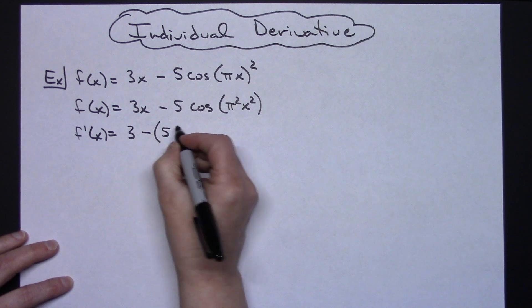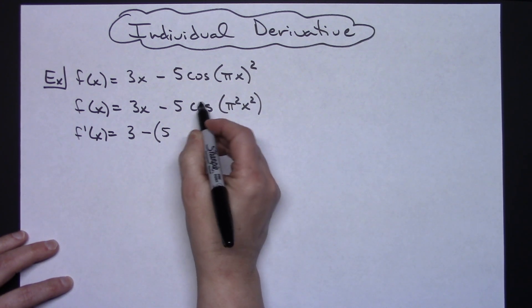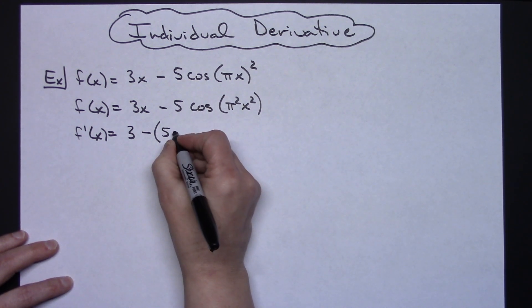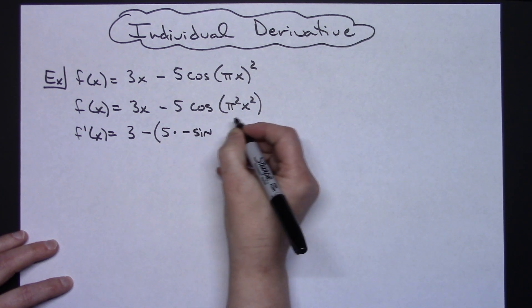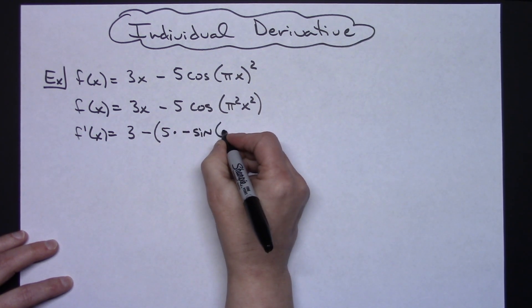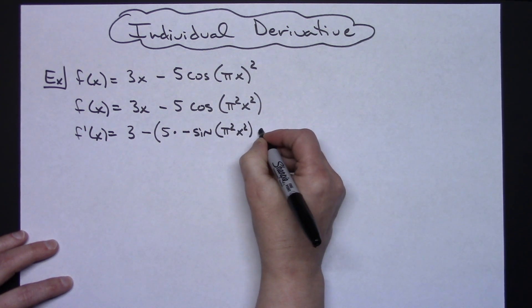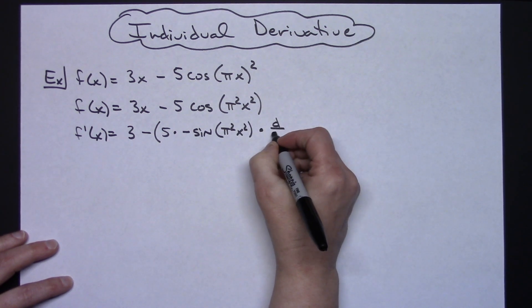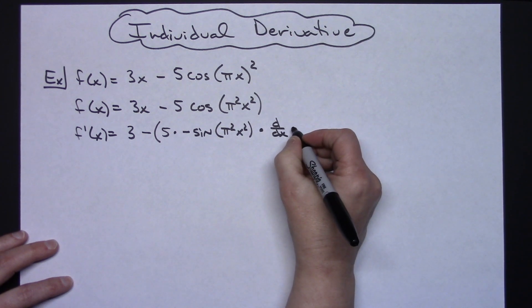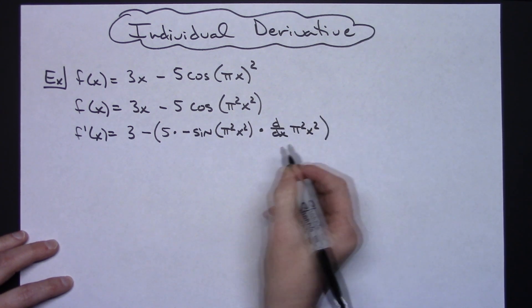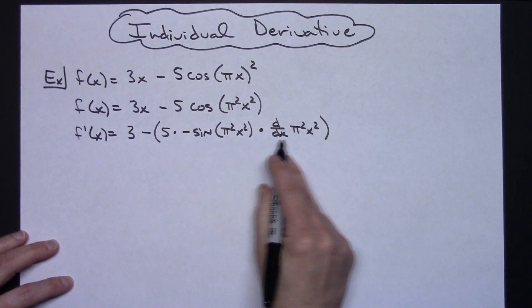That 5 is just going to stay there. Alright now derivative of cosine is going to be a negative sine leaving that inside alone so pi squared x squared and then times d dx times the derivative of whatever's on the inside so pi squared x squared and then close that set of parentheses. All of this is multiplication.